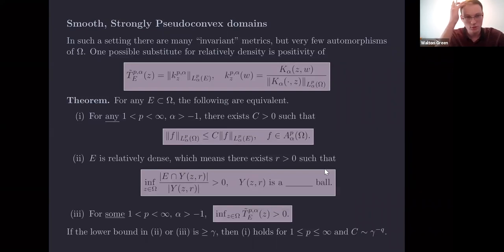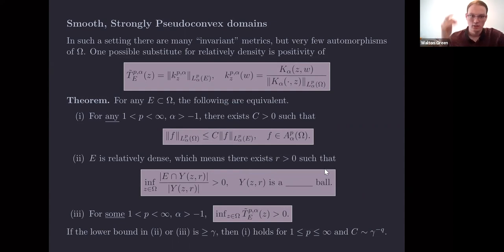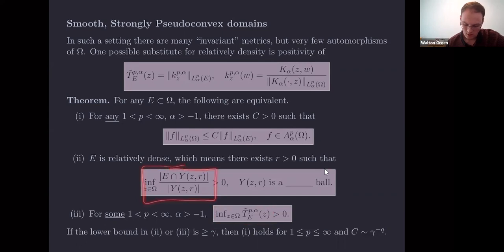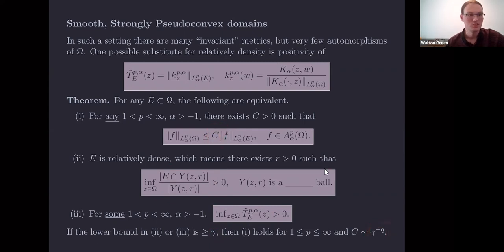We are also able to recover the polynomial dependence on the lower bound: if the infimum of the density or the reproducing kernel testing quantity is gamma, then our constant is on the order of gamma to some power — it is polynomial in gamma.